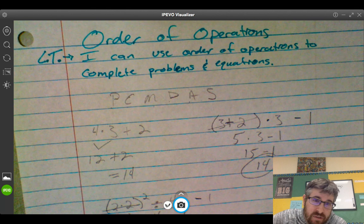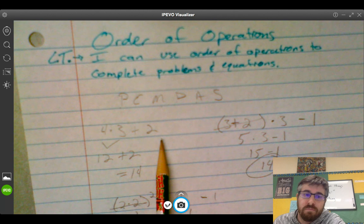I did a couple problems and I'll talk you through it. We have 4 times 3 plus 2. So we have to do multiplication first. 4 times 3 is 12. Plus 2, we get 14.